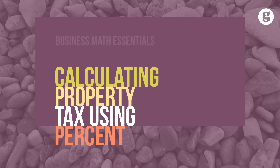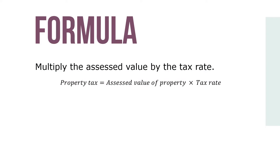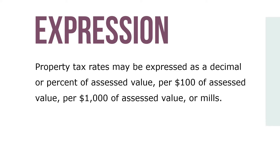Let's take a look at calculating property tax using percents. The property tax due is computed by applying the tax rates established by the taxing authorities in that area to the assessed value of the property. Our formula multiplies the assessed value by the tax rate as you see here. Property tax rates may be expressed as a decimal or percent of the assessed value, per $100 of assessed value, per $1,000 of assessed value, or mills.